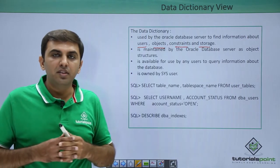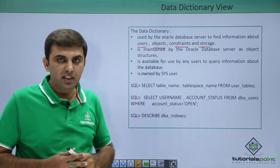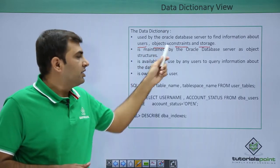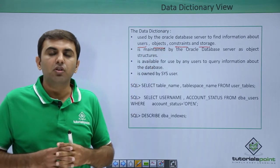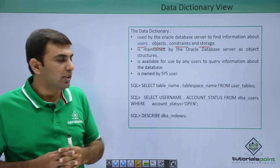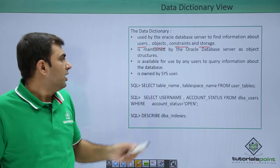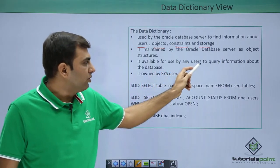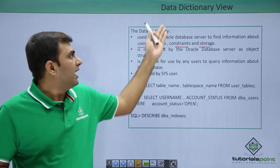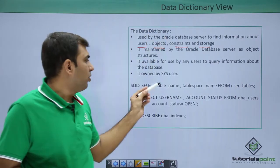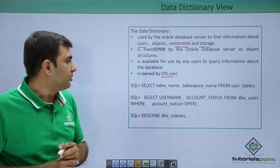If you want to see how many data files we have in the Oracle database, you can check the data dictionary view. Also, which constraints are created — primary key, foreign key — that information you can collect from the data dictionary view. It is maintained by Oracle as an object structure, available for any user to query. All data dictionary views are owned by the SYS user.